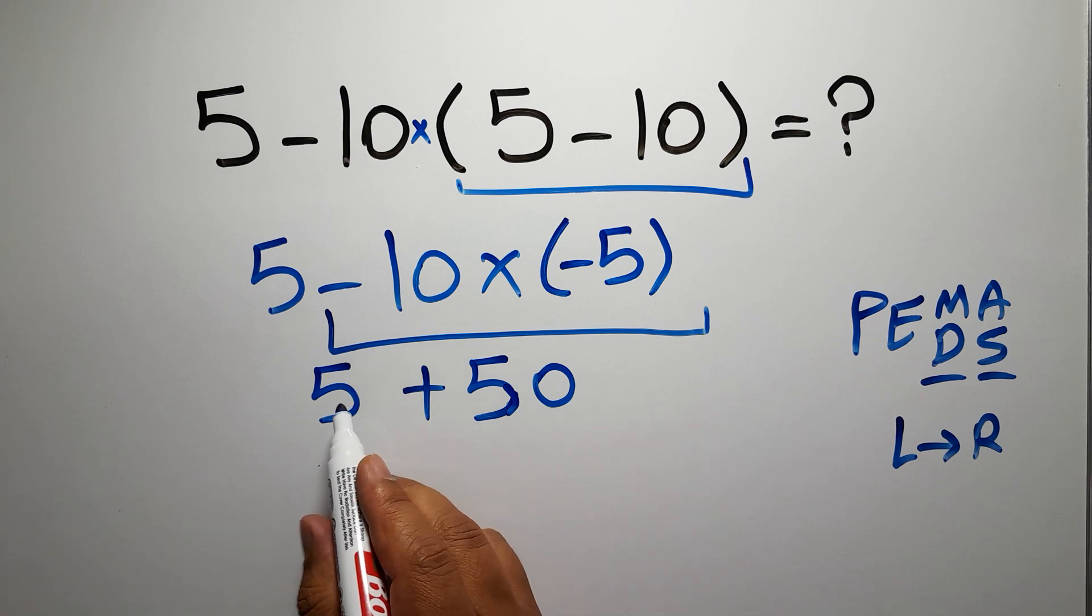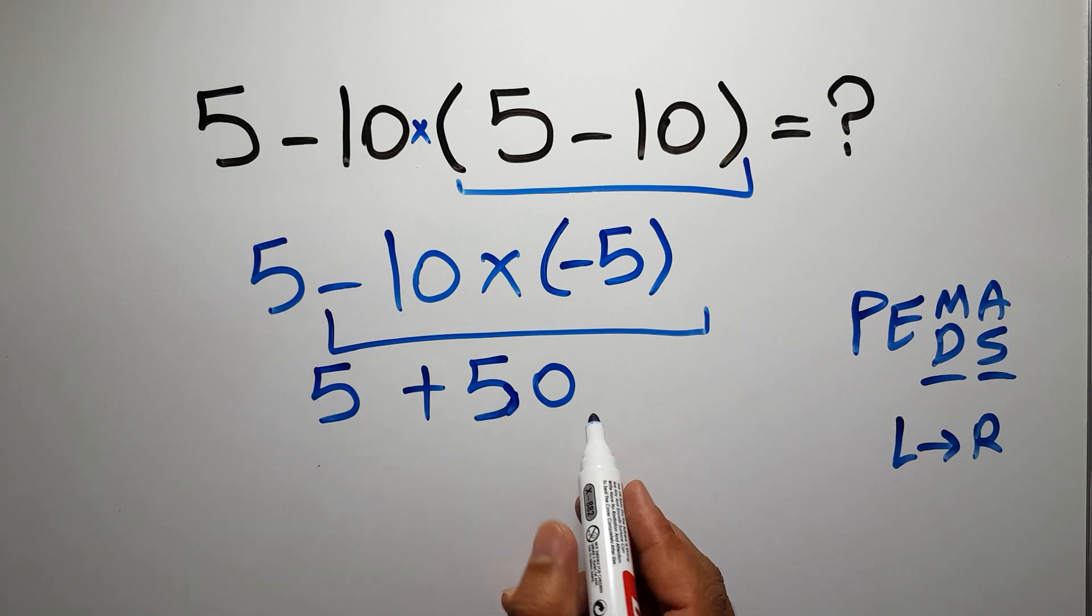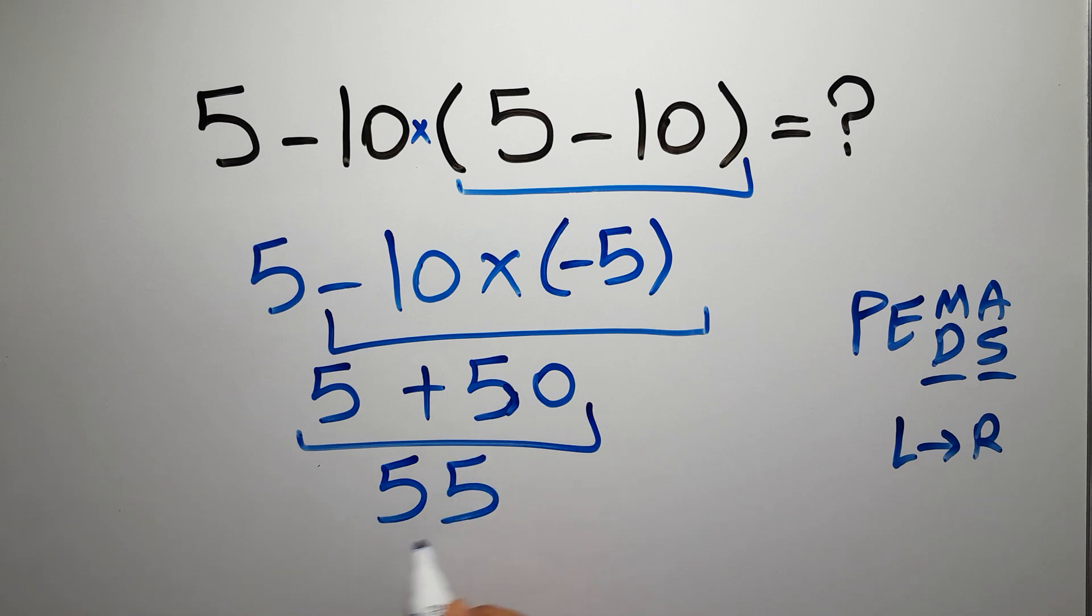So we have 5 plus 50, which gives us 55, and this is our final answer to this problem. The correct answer is 55.